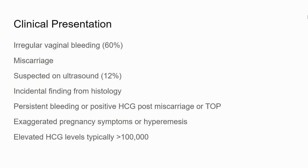So how do these women present? Quite often they'll come with irregular vaginal bleeding in about 60% of cases. There may be miscarriage, or it may be suspected on ultrasound. It could be an incidental finding from histology sent for another reason. There may be persistent bleeding after a normal pregnancy, or a positive beta-HCG after miscarriage or termination. Sometimes they present with exaggerated pregnancy symptoms or hyperemesis, due to elevated HCG levels — typically above 100,000 for a complete mole.